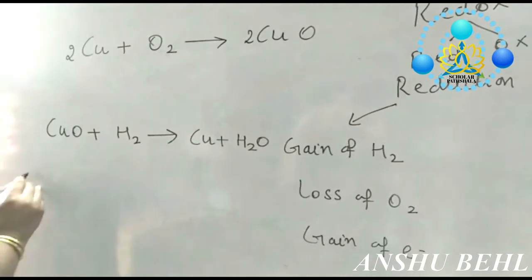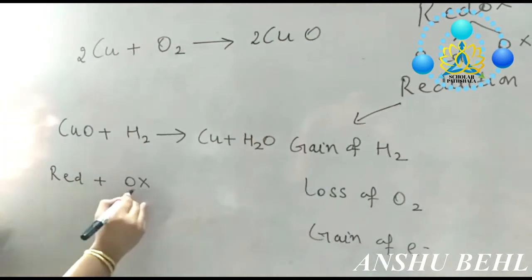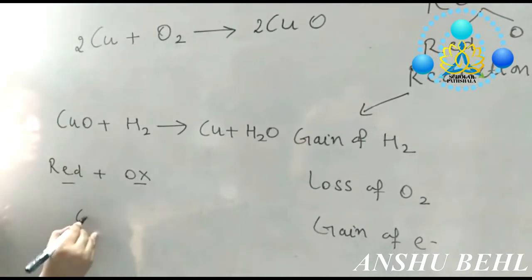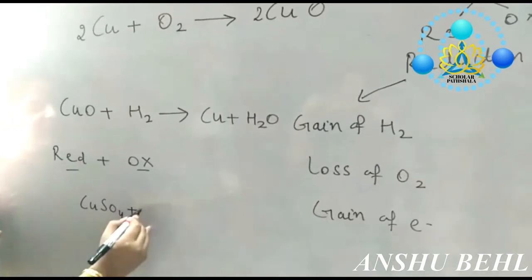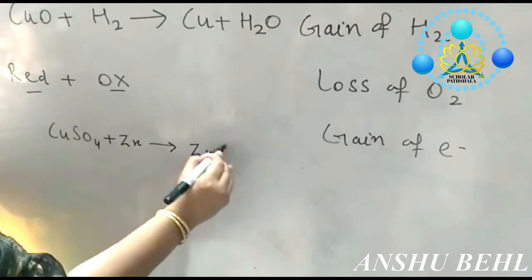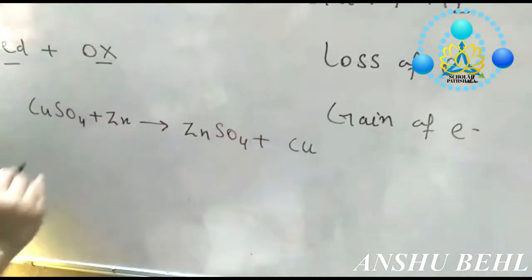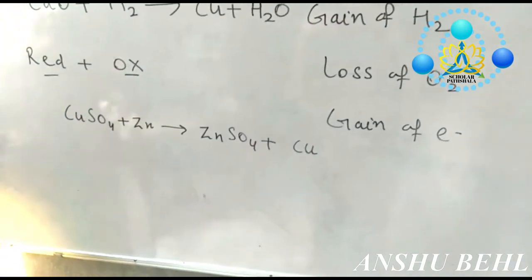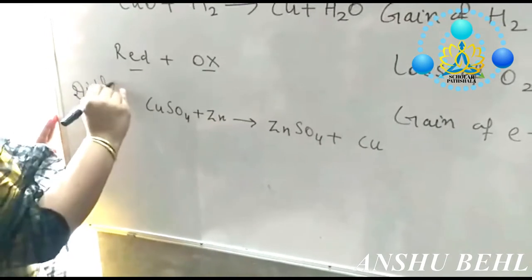We can see that reduction and oxidation take place simultaneously. For example, if you take copper sulfate and react it with zinc, it turns to zinc sulfate plus copper. You have done this reaction before — it was a displacement reaction.